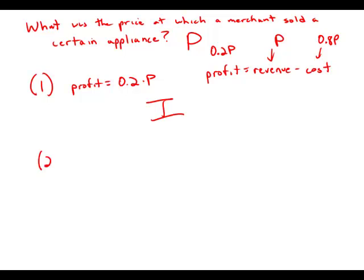Now we're going to move to statement number two, and we have to be very careful here. This is a problem where statement number one gives us a rich amount of information. We have to ignore all that information and simply consider statement number two on its own. Statement number two tells us the price at which the merchant sold the appliance was 50% more than the cost.